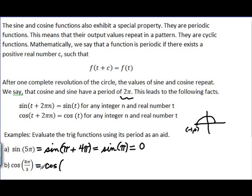So here I need to rewrite this 8π over 3 as some sum, where one of those numbers is a multiple of 2π. Well, you might want to think about this. 8π over 3 is the same thing as 2π over 3 plus what? 6π over 3, right?